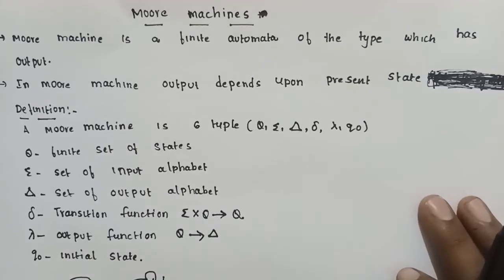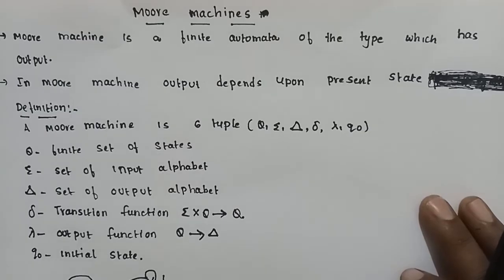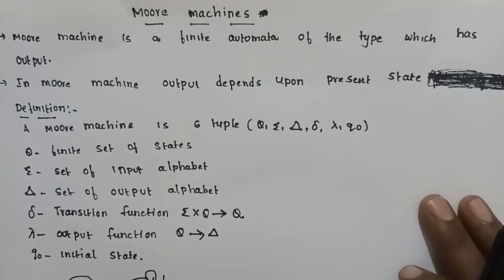Welcome to the channel SRT TeleVLectors. Today we will discuss more machines in the video. We will discuss DFA, NFA, and Epsilon NFA. It is a finite automaton without output.